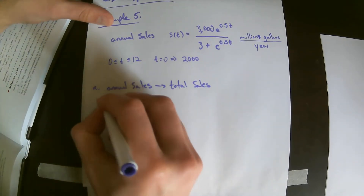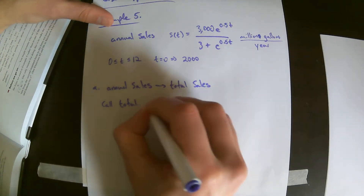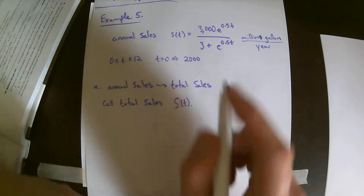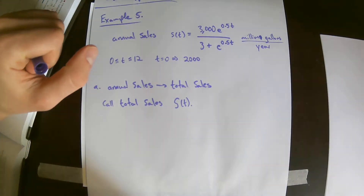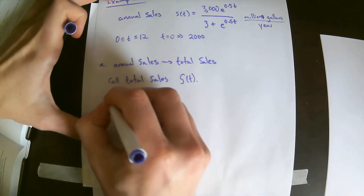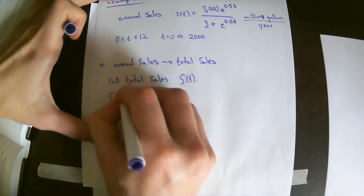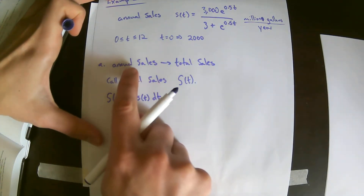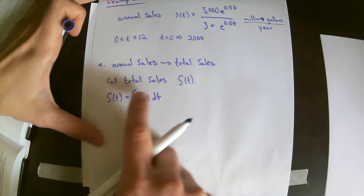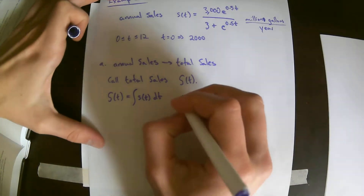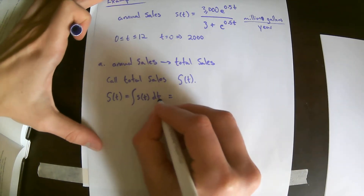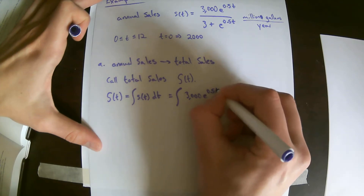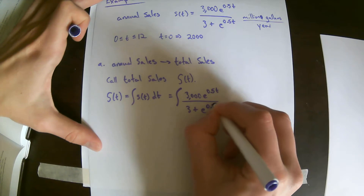We're going to call total sales capital S of t. That means capital S of t is equal to the integral of little s of t dt — because to get from annual sales to total sales, you integrate the annual sales. So we're going to integrate 3000e to the 0.5t over 3 plus e to the 0.5t, dt.